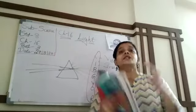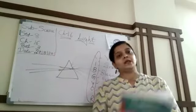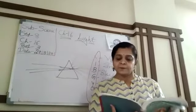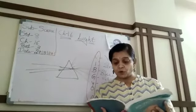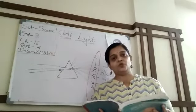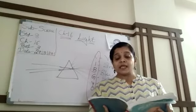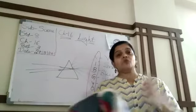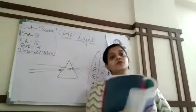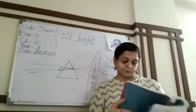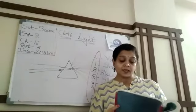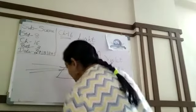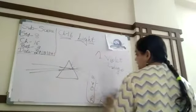We can see only when light enters our eye. The eye is one of the most important sense organs. It is therefore important to understand its structure and working. The eye has a roughly spherical shape — spherical means round, but not perfectly round.